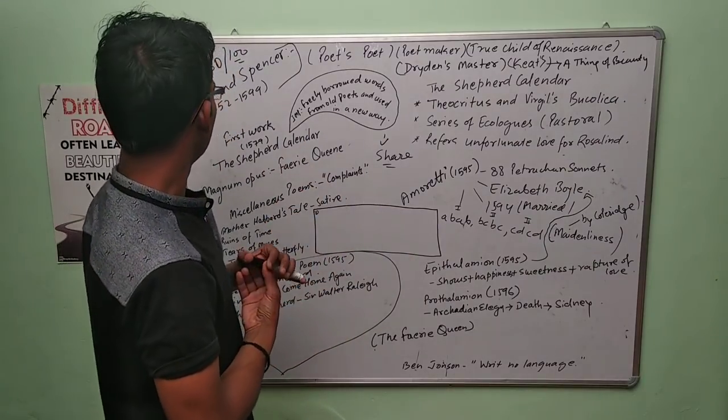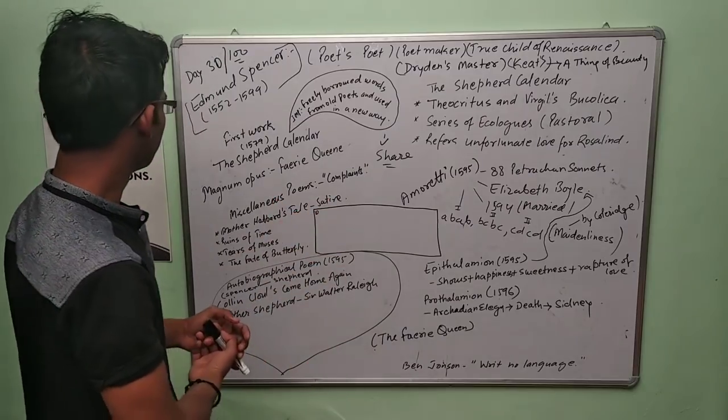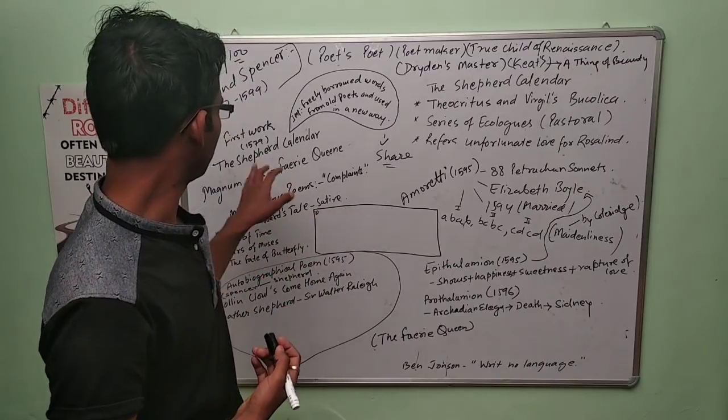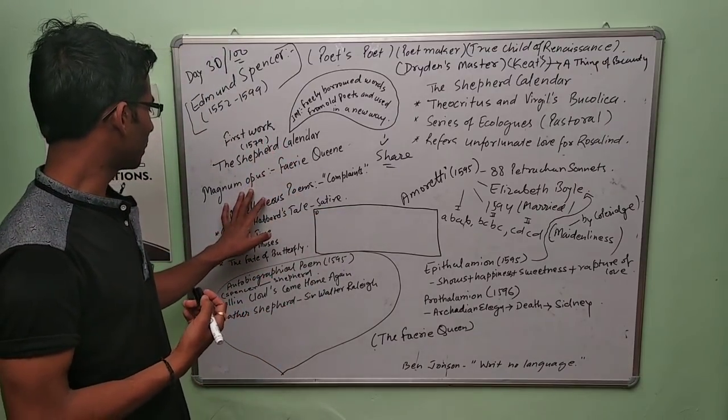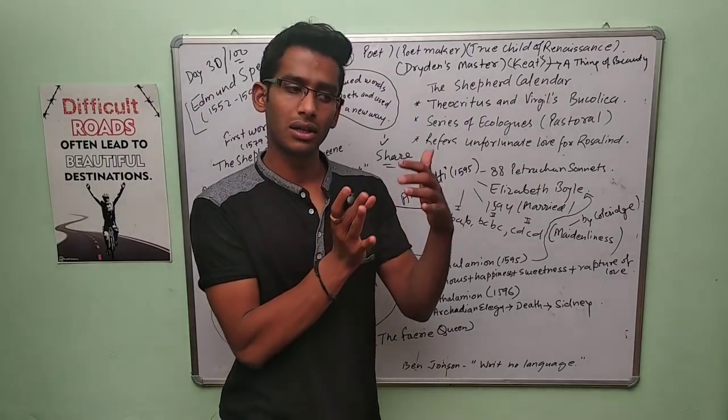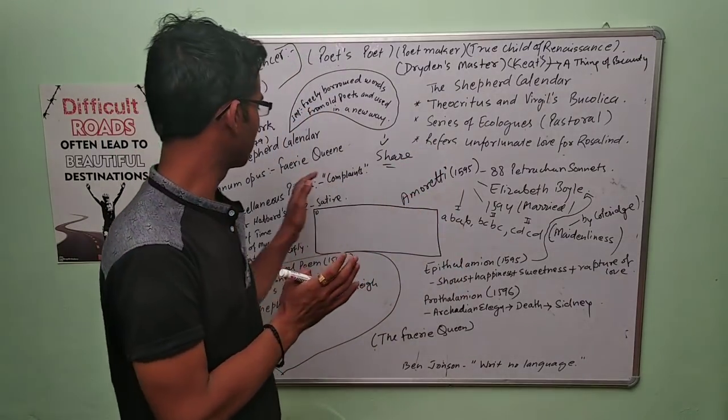His first work was The Shepheardes Calender, which got published in 1579. But his magnum opus is The Faerie Queene. I have already made two separate videos on The Faerie Queene, so you can check out my channel.